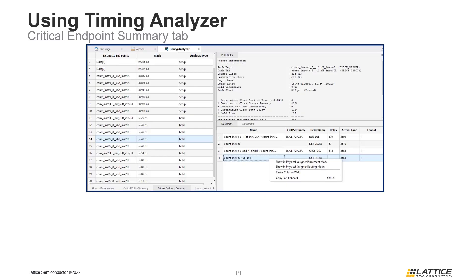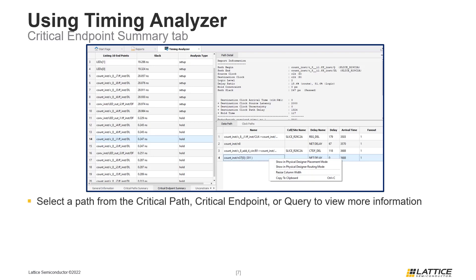A useful feature of the Timing Analyzer tool is that its reported critical paths can be directly cross-probed with Radiant's Physical Designer tool. To cross-probe a critical path in Timing Analyzer, select a path from one of Timing Analyzer's critical path, critical endpoint, or query tabs. Selecting a path in one of these windows will display additional information about that path, as can be seen from the example on the slide.